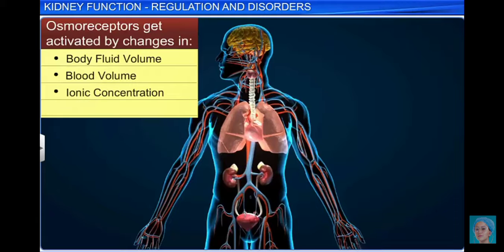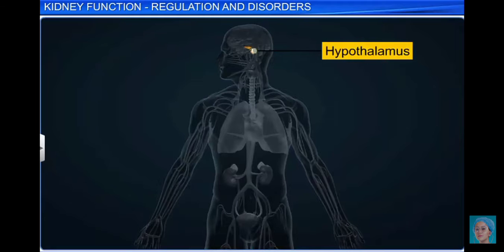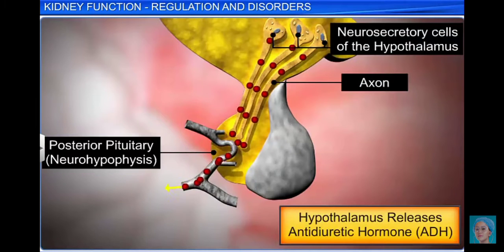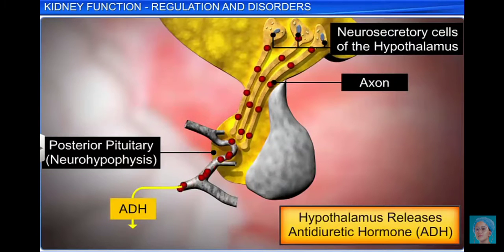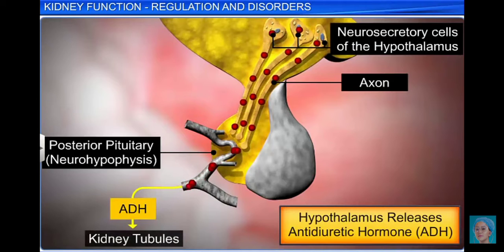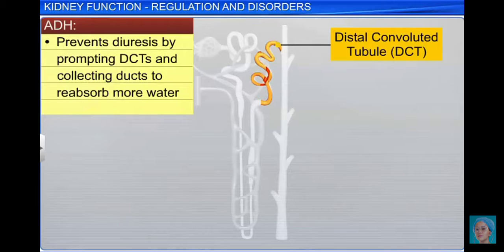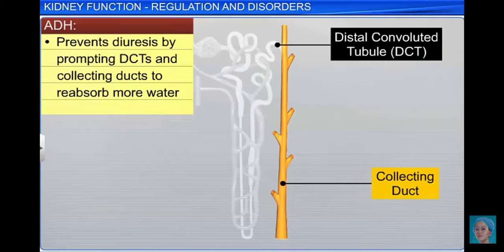An osmoreceptor is a sensory receptor that detects changes in osmotic pressure. For example, a decrease in the level of body fluids activates the osmoreceptors, which stimulate the hypothalamus, which in turn neurally stimulates the neurohypophysis of the pituitary to release the antidiuretic hormone or ADH or vasopressin. ADH prompts the distal convoluted tubules or DCTs and the collecting ducts to reabsorb more water, thereby preventing diuresis.